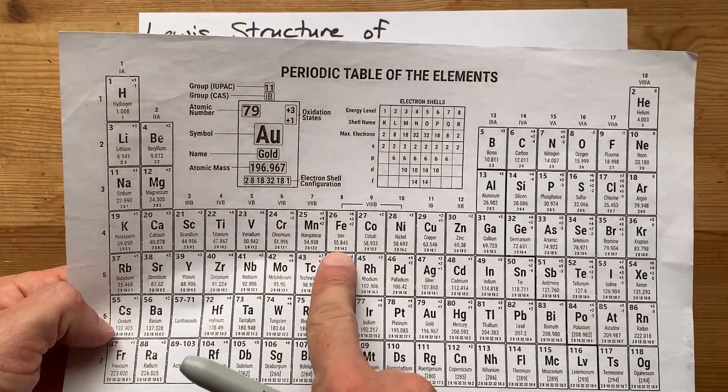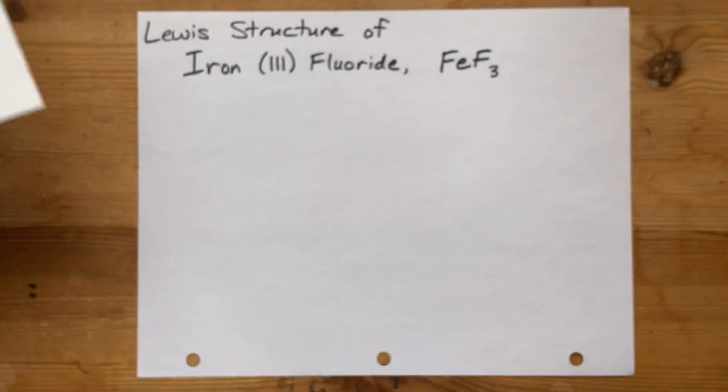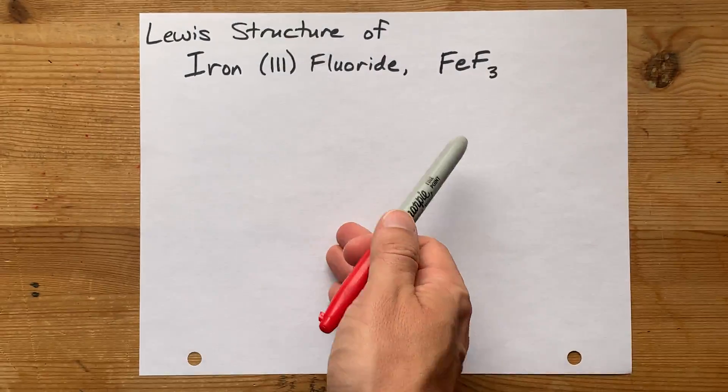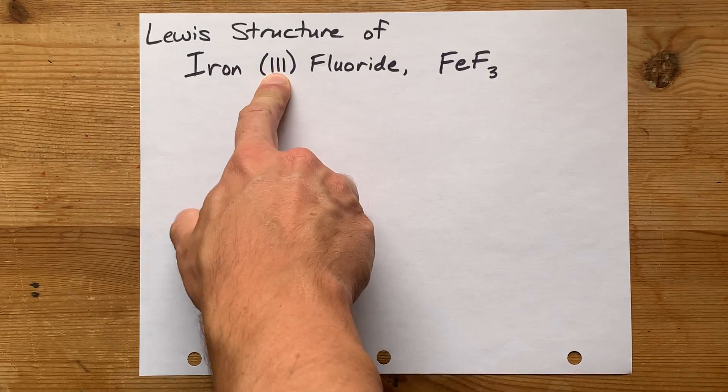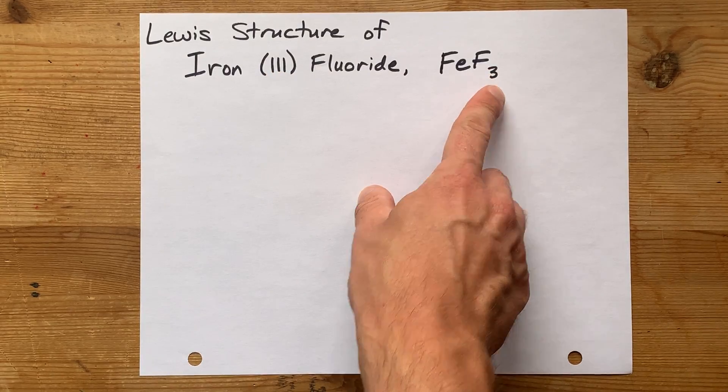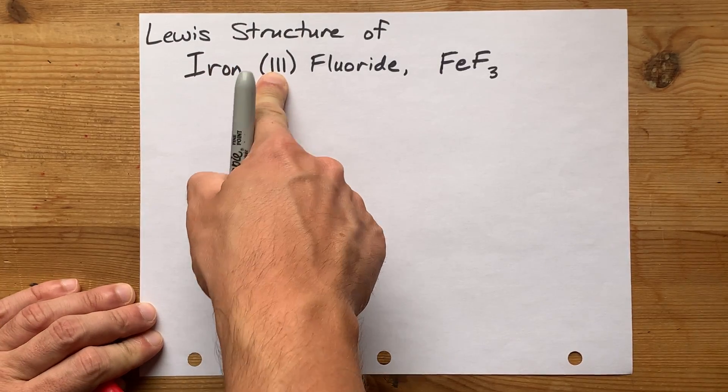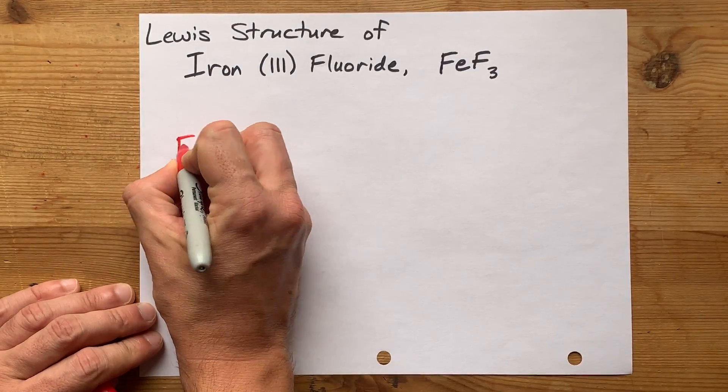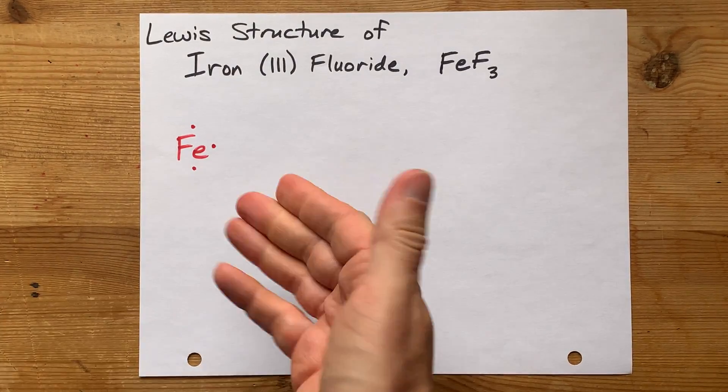Now, iron is a transition metal from the middle of the periodic table, and it can have multiple different charges. So, to figure out how many valence electrons we start with, I want you to look at either the name or the formula and be informed by that. This is iron with a plus-three charge, and so I want you to draw Fe with one, two, three valence electrons around it.